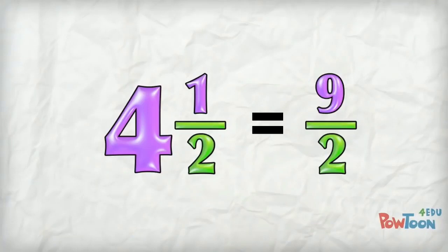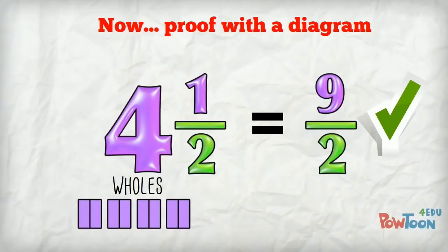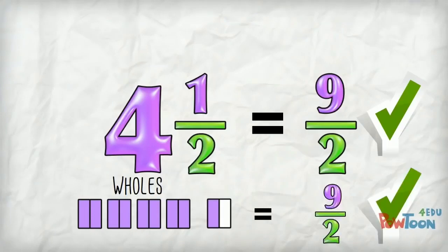Four and a half is the same as nine over two. And I can use a diagram to prove it. Four holes, each hole is worth two parts, plus one more part out of two. That's nine parts out of two. It's the same answer.